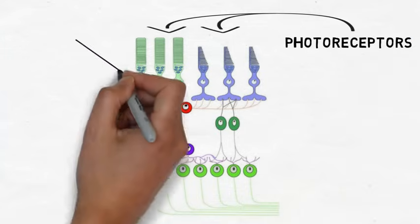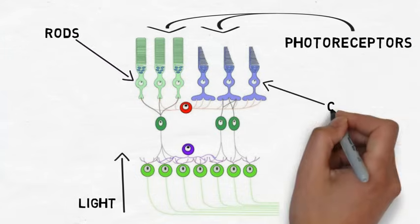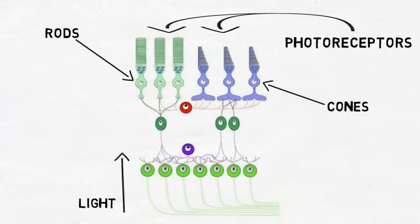There are two types of photoreceptors, rods and cones. Rods allow us to see in dim light but don't allow for the perception of color. Cones, on the other hand, allow us to perceive color under normal lighting conditions.